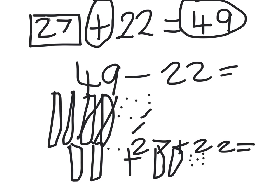Now I'm going to count what there is all together: 10, 20, 30, 40, 41, 42, 43, 44, 45, 46, 47, 48, 49. So my answer is 49.